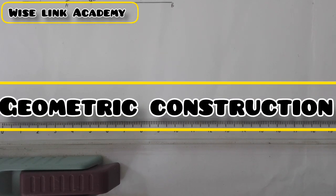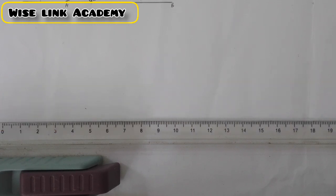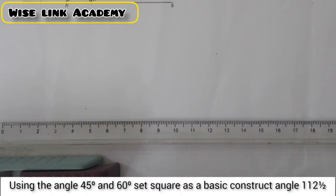Today, we'll be constructing angle 112.5. As you can see the question in front of you, using the angle of the 45 degree and 60 degree set square as a basis, construct angle 112.5.